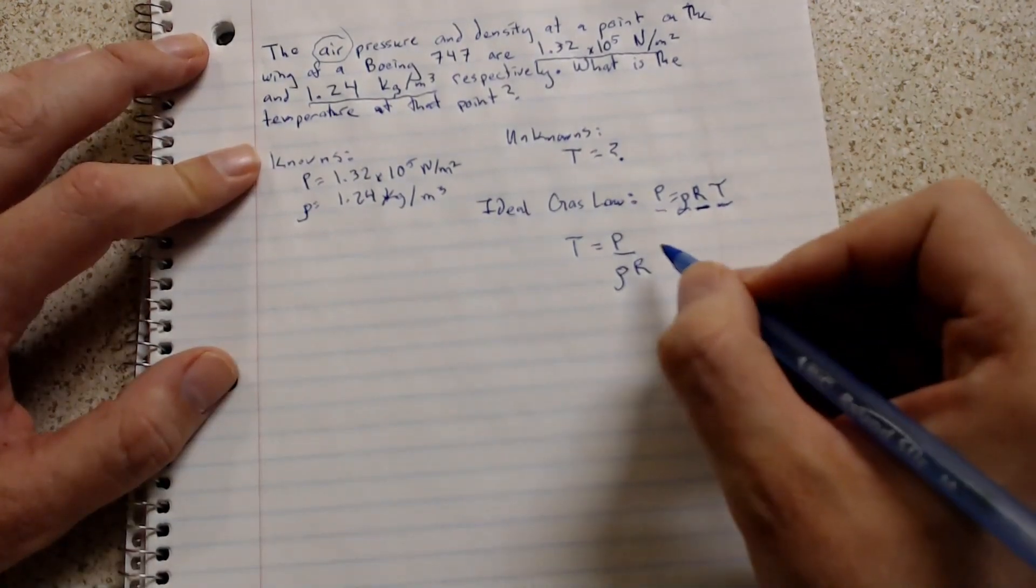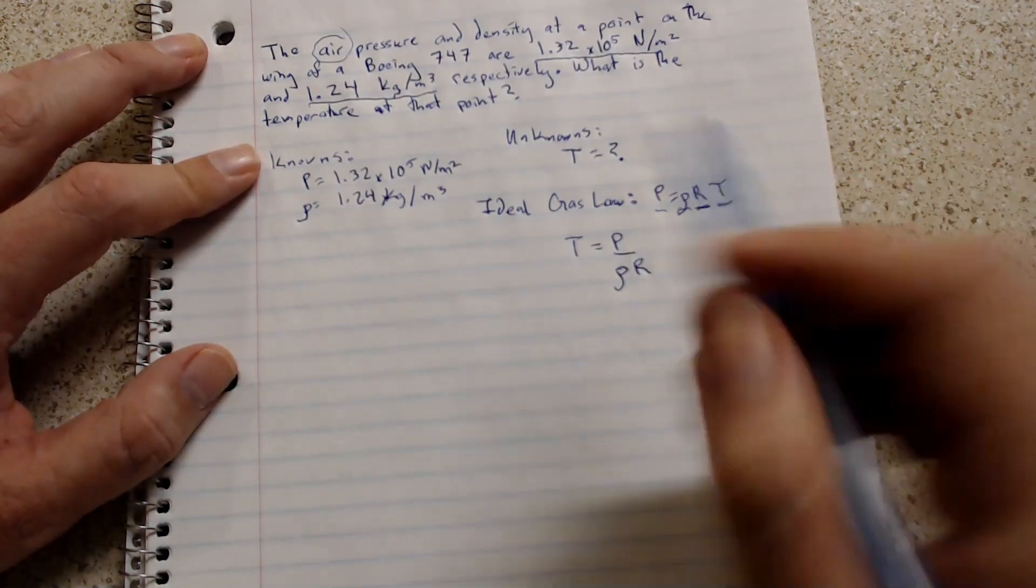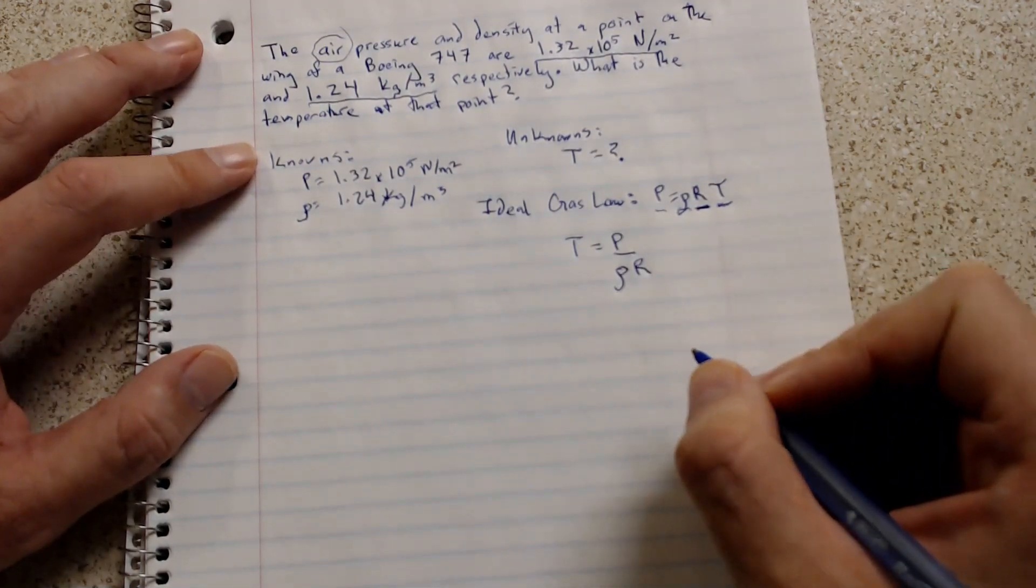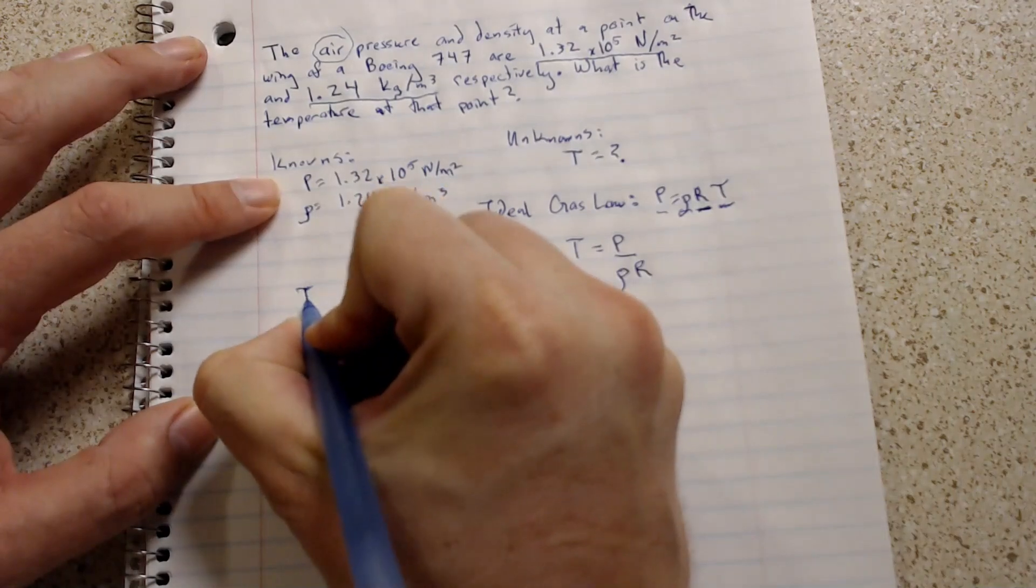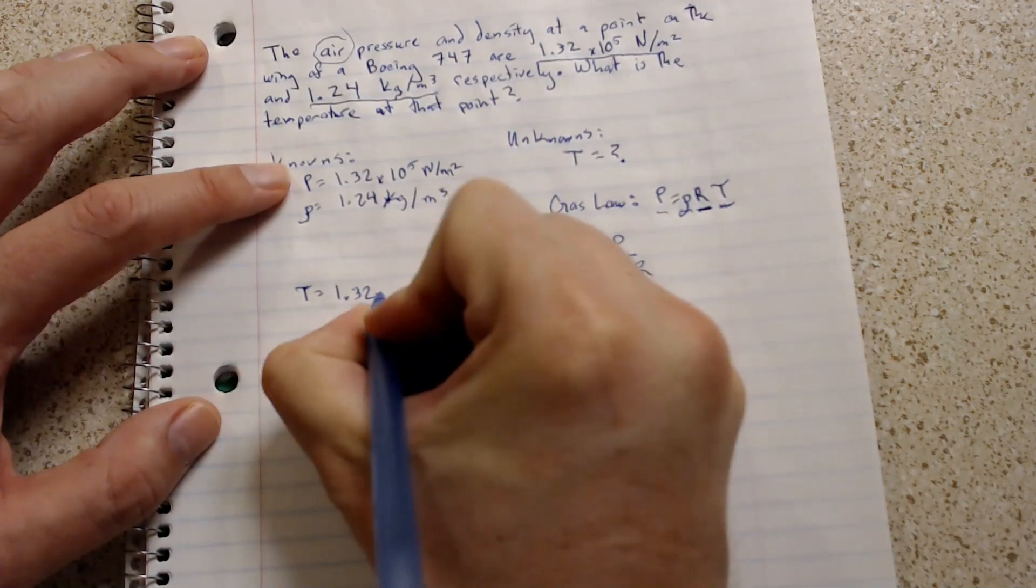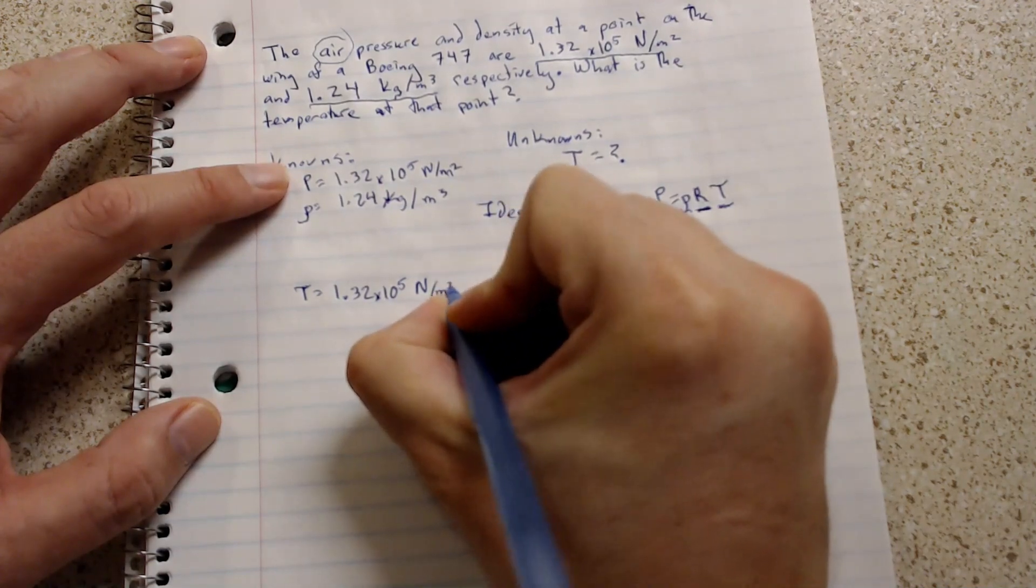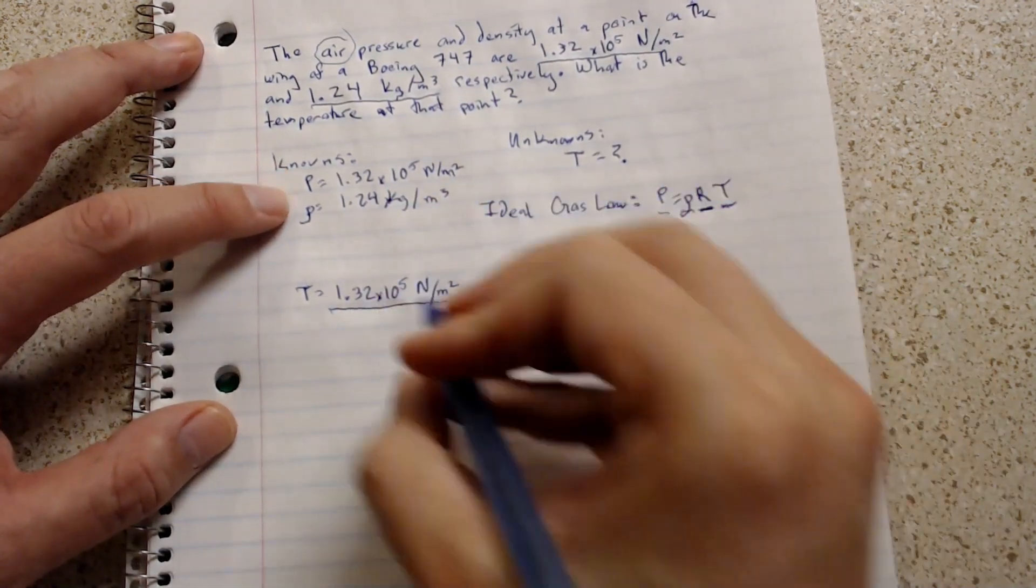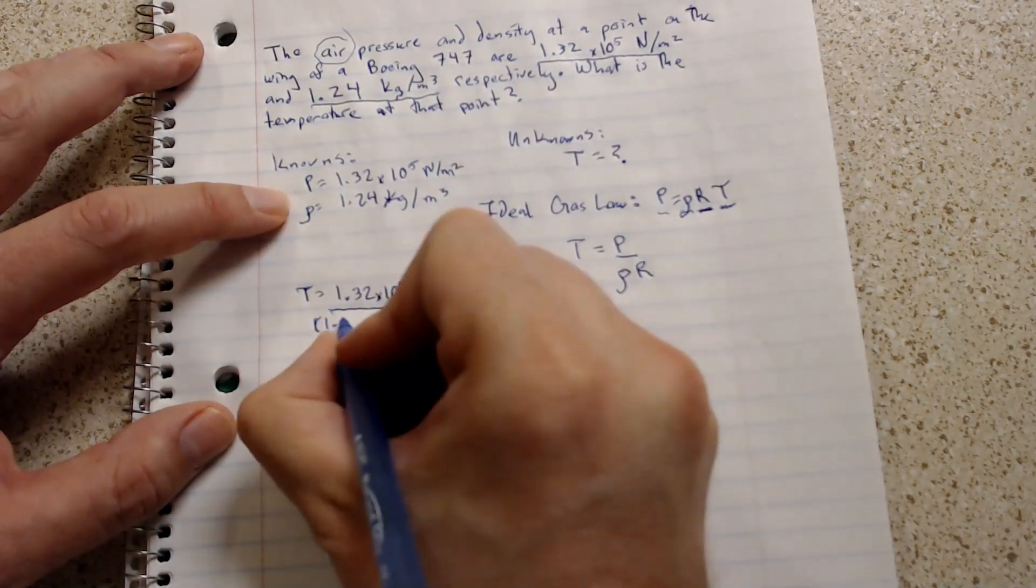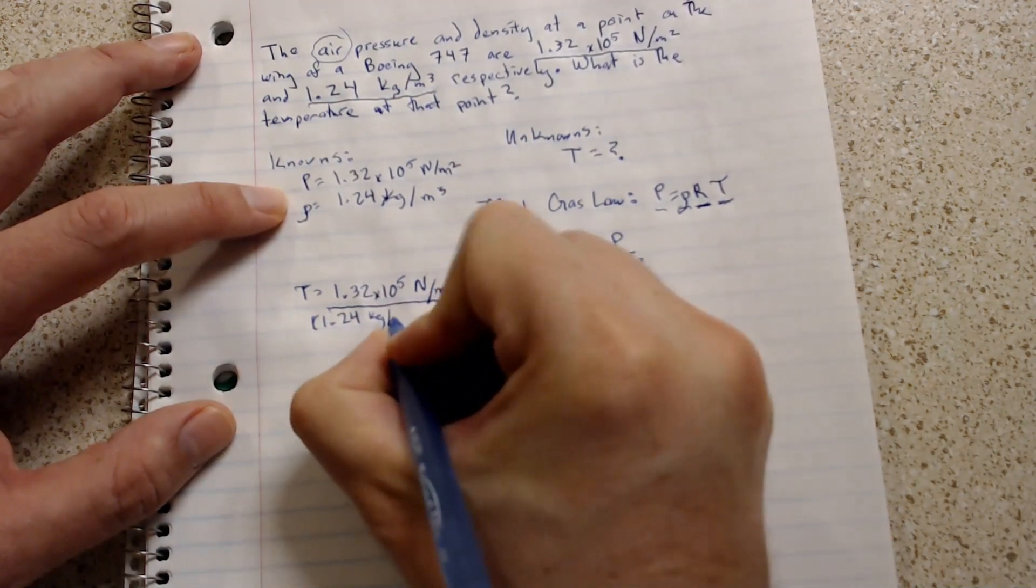As you can see this is going to be a simple plug-and-chug where we just rearrange an equation and we plug in the values we know and solve for the value we don't know. I'm going to scoot it over here. Temperature equals, the pressure is 1.32 times 10 to the fifth newtons per meter squared over 1.24 kilograms per meters cubed.